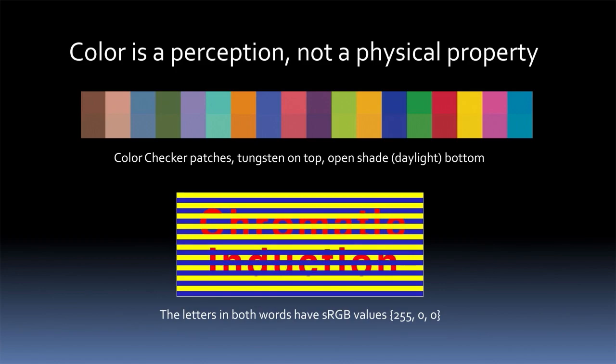Now the bottom one, which I think you probably can see on the screen because it's a little more dramatic, is that we don't really understand all of the color processing that goes on in the visual system. And this is an example of something that I don't think anybody knows why this happens.